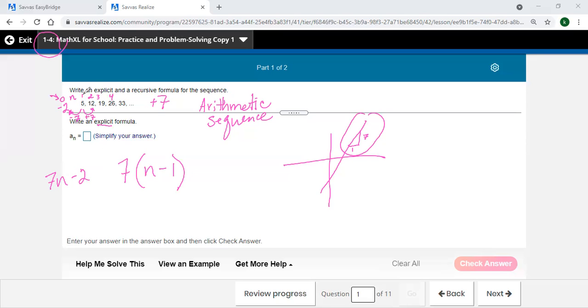If I did 7 times 1, that would be 7 minus 2 is 5. And if I went to the next one and checked it, when n is 2, 7 times 2 is 15, minus 2, that would be the 12. So that's one way to do it.